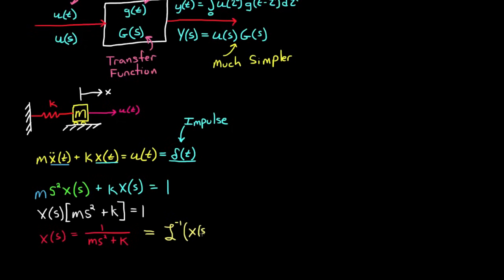But what if we want this in the time domain? Well, all we have to do is take the inverse Laplace transform. And this isn't one that I've memorized, so I had to look this up in a table. And it turns out it's 1 over the square root of km times the sine of the square root of k over m times t, or a sinusoid, as you'd expect.